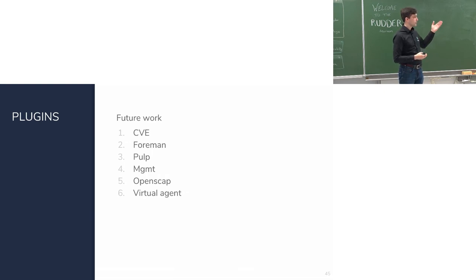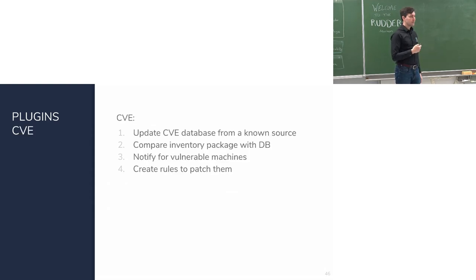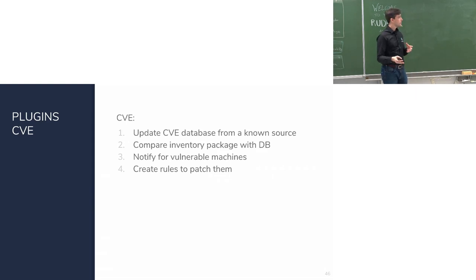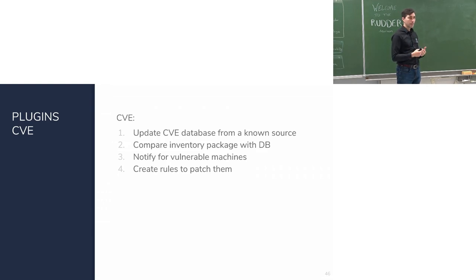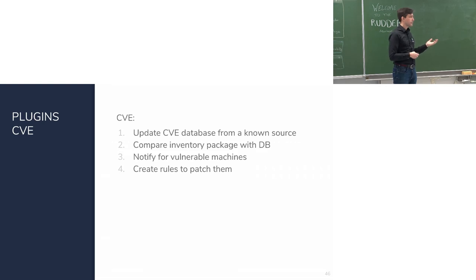First, a CVE integration plugin: we can integrate with a CVE database. We've already experimented with this — we can automatically download recent exploits and, from the database, know what conditions make a system vulnerable. Since we have an inventory of all platforms, we can automatically know if a package contains a vulnerable product, notify the user of the list of vulnerable machines, and create rules to patch them by specifying which version of software should be installed.